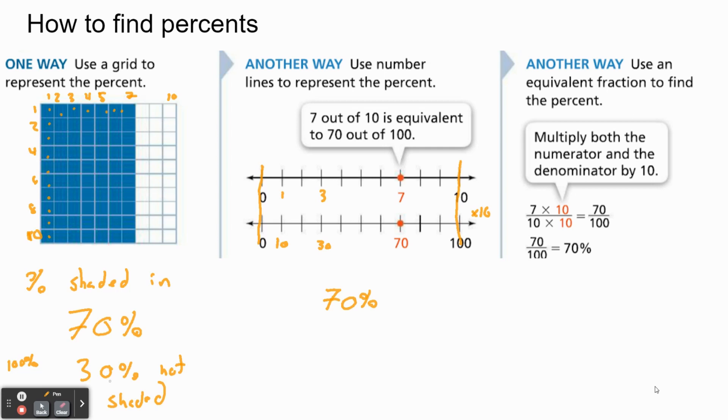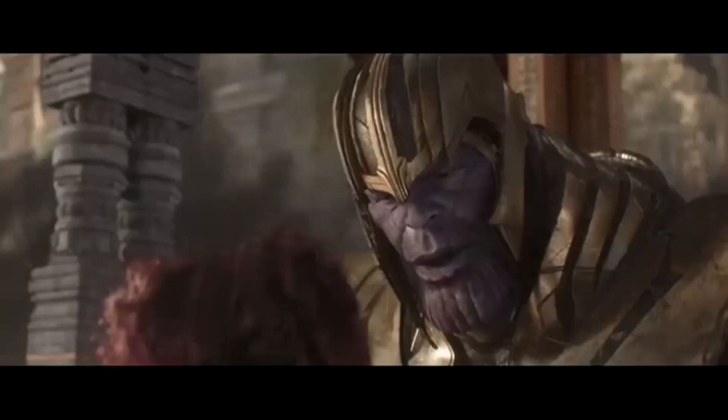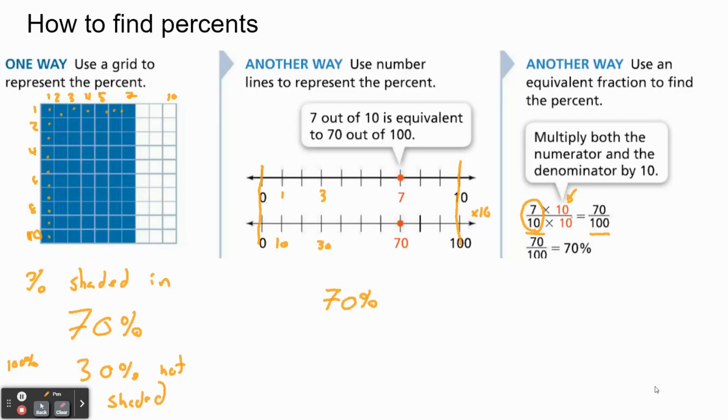Again, you might be able to guess what the last one's going to be. In fact, to be fair, it shows us here. You can use an equivalent fraction to find the percent. For example, if we start off with a fraction 7/10, we can think, what do we need to do to 10 to make it into 100? Well, if we multiply it by 10, we can do that. You'll notice that we also do the same thing to the top - that way we keep things perfectly balanced, as all things should be. So we do 7 times 10 as well, 70 out of 100. 70 out of 100 is again 70%.